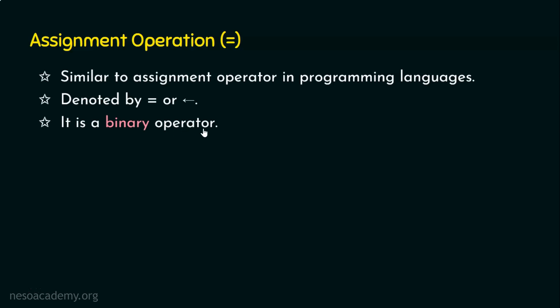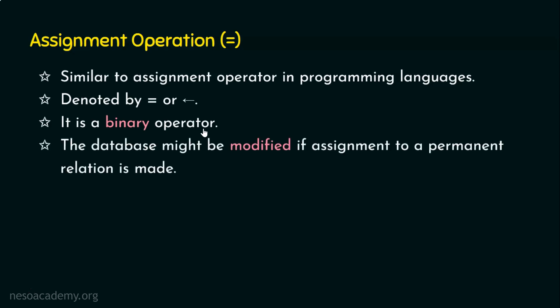The assignment operator performs assignment, but note that the database might be modified if the assignment is made to a permanent relation. When working with a database, always prefer assigning to a temporary relation name or variable. If we attempt to assign to a permanent relation, the database will be modified, because we are changing the permanent relation directly, not a temporary one.